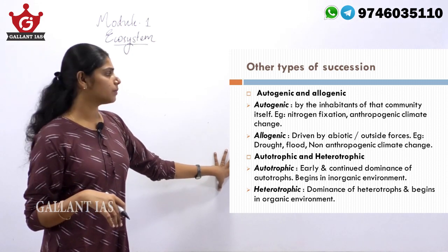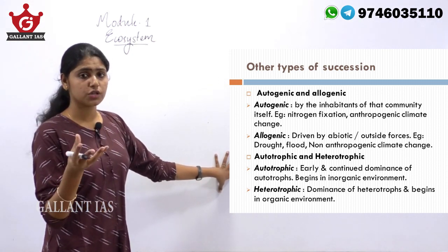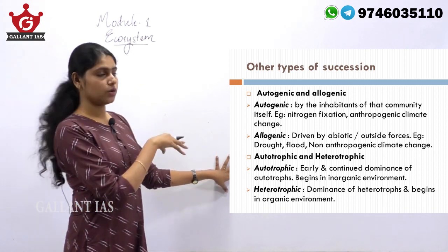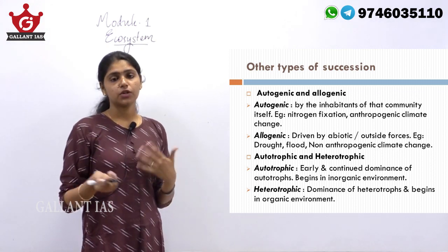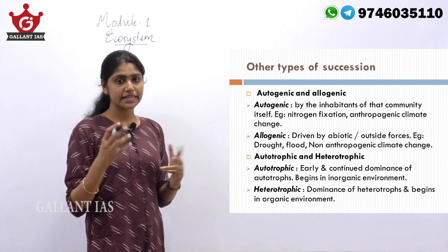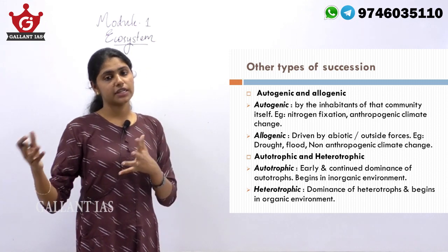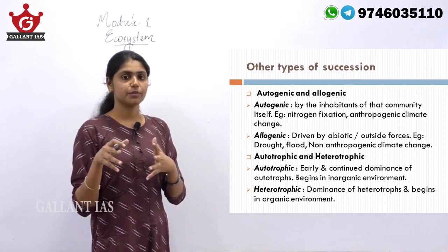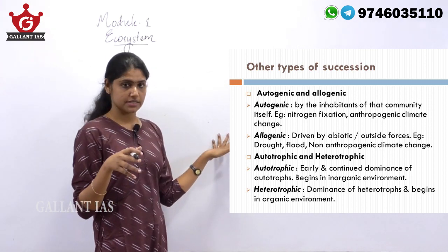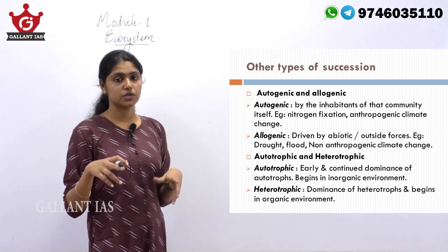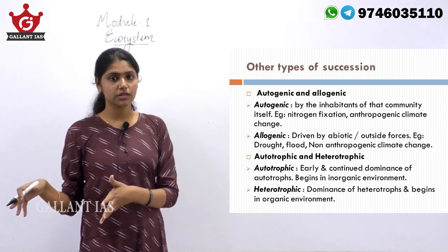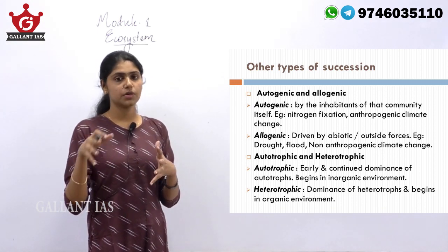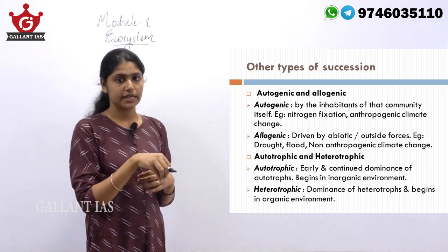In autogenic succession, the inhabitants of that particular ecosystem must be involved. For example, anthropogenic climate change — climate change caused by human actions — is an example contributing to autogenic succession. Whereas non-anthropogenic climate change, caused by natural causes, comes under allogenic succession because it is driven by external abiotic factors, not by factors present within the ecosystem itself.